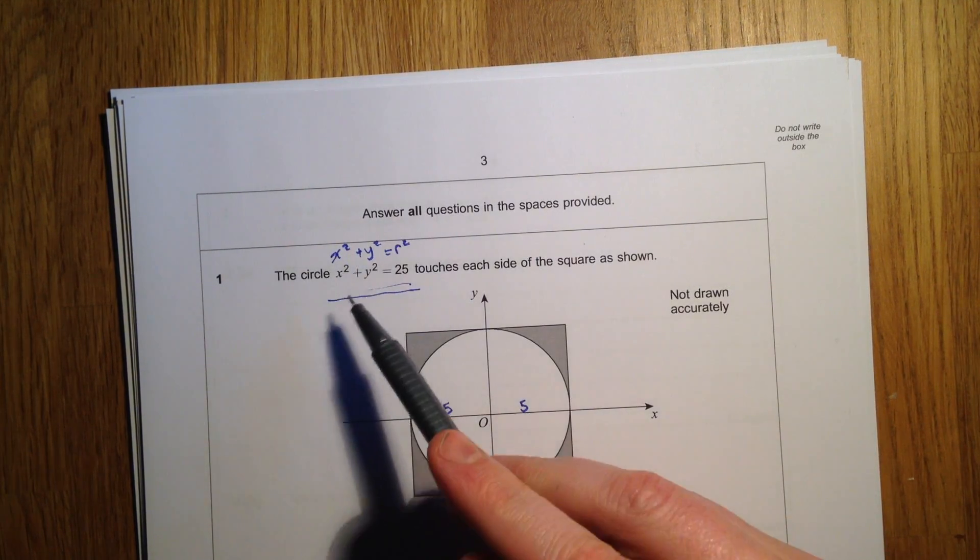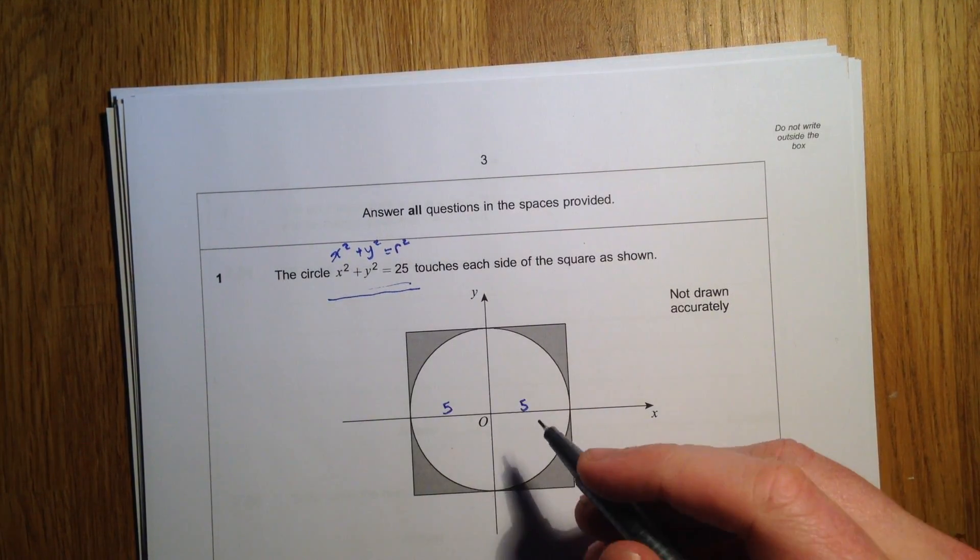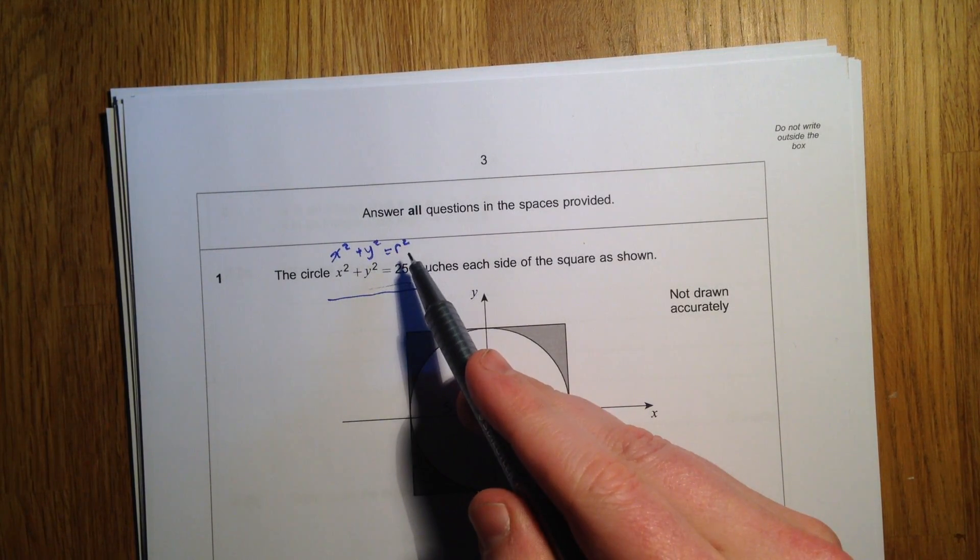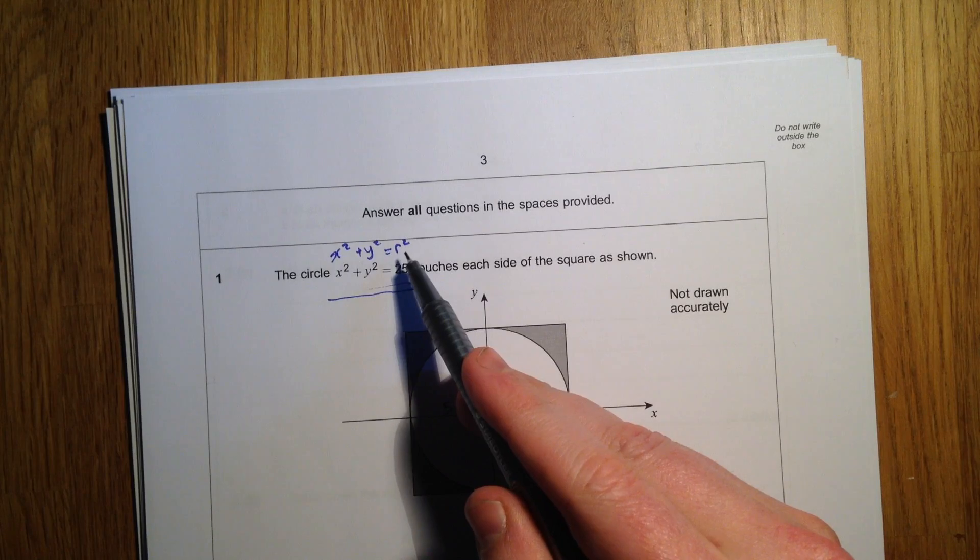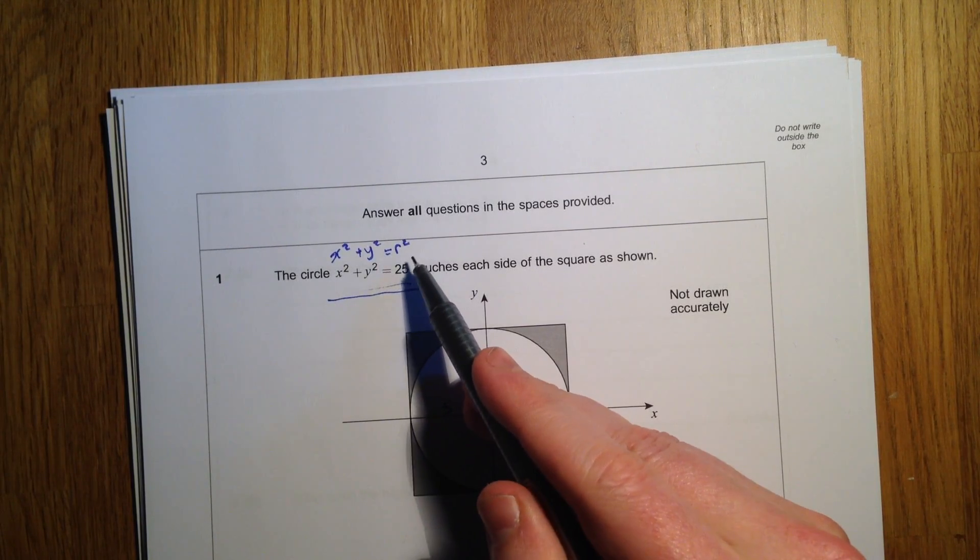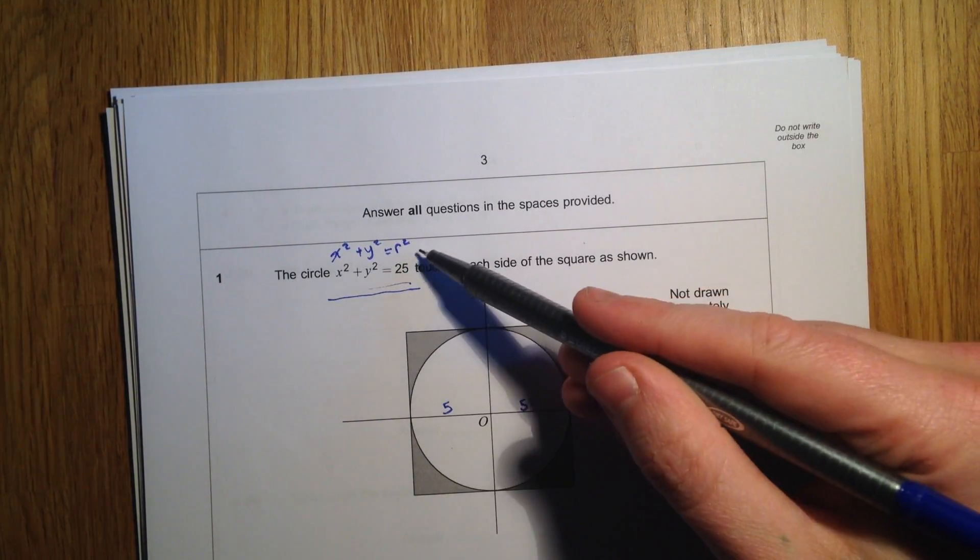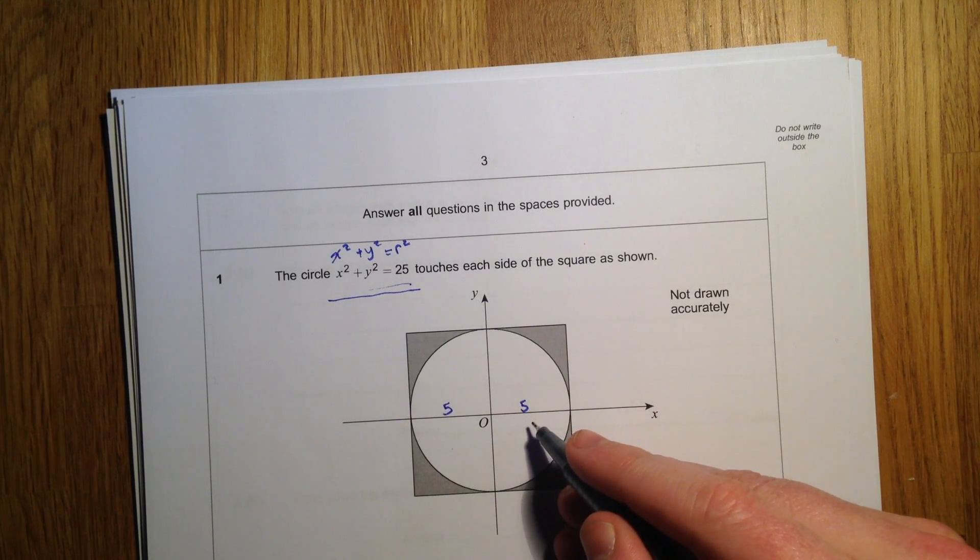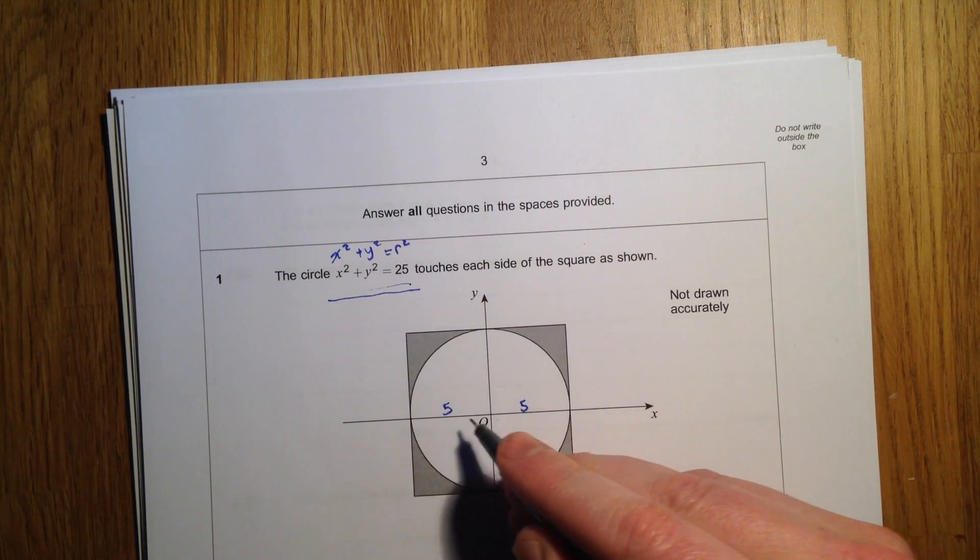In question 1, I've written out the equation of the circle up here. This is x squared plus y squared equals r squared, so r squared is 25, which means that r is the square root of 25, which is 5. So I've written that the radius here is 5.